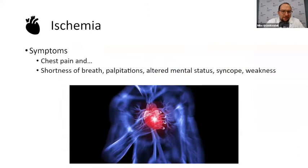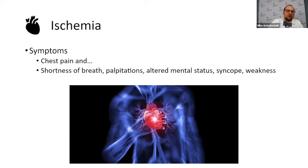Whenever you have a patient with ischemia, it's important to note some of the symptoms they have. Chest pain is obviously the one we always think about — the classic Levine sign: substernal chest pain radiating down the arm and into the neck. That's great if you see it, but most patients will not present that way.